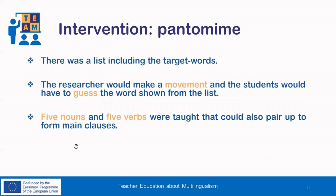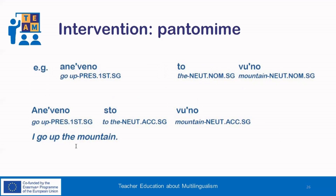Moving to pantomime, during the intervention a list of the target words was provided to the students. The main process was that every time the researcher would make a movement, without producing any speech, the pupils would need to guess which word is shown from the word list. Similar to the previous intervention, 10 words were taught in total — 5 nouns and 5 verbs — which could again form short sentences. An example includes two words taught through pantomime: 'go up' and 'the mountain,' which could form the simple sentence 'I go up the mountain.'